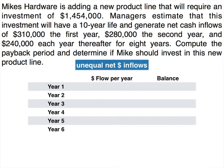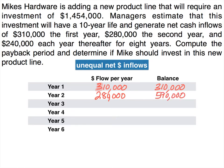We fill out the spreadsheet year by year. The cash flow in year one was $310,000, so our running balance at the end of year one is $310,000. In year two the cash flow was $280,000, bringing our running balance to $590,000. From year three forward it's $240,000, so at the end of year three we've accumulated $830,000. In year four, adding another $240,000 brings the balance to $1,070,000. We keep going until we reach the amount invested — almost $1.5 million.